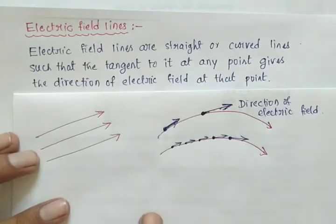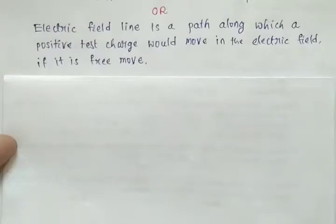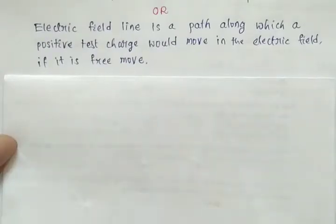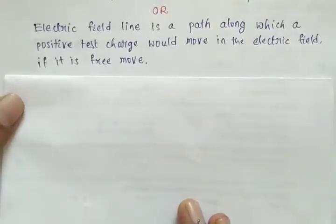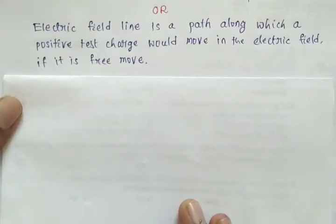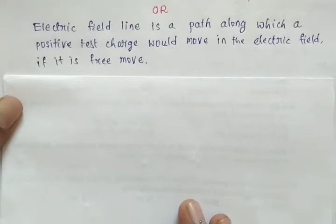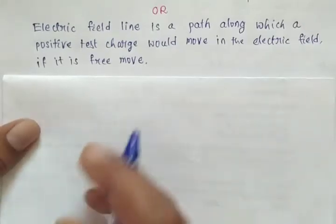Now we will move to the next definition. Electric field line is a path along which a positive test charge would move in the electric field if it is free to move.